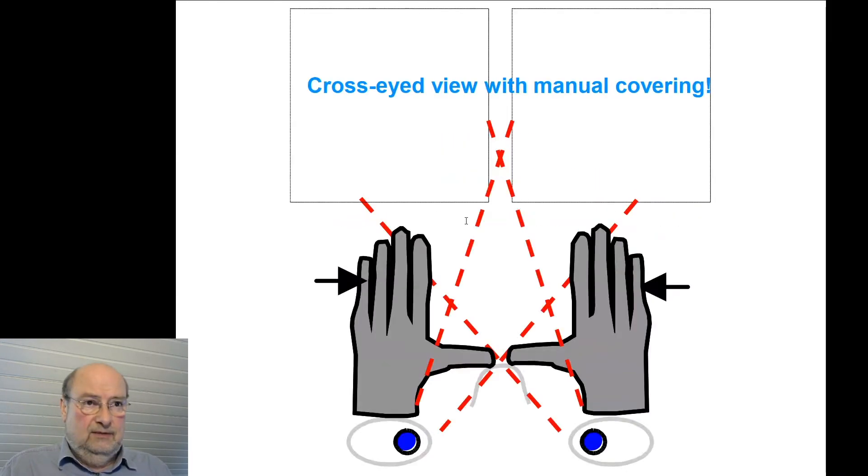And there is a simple technique and it is just the manual covering of one of the images for each of our eyes. So you can use your hands. You move the left hand to cover the left eye partially so that this can only see the right image. And then you use the other hand and move it to the middle until the right eye can only see the left image.